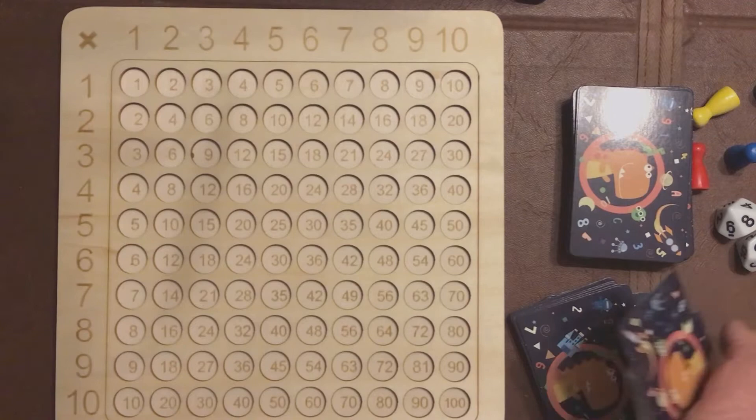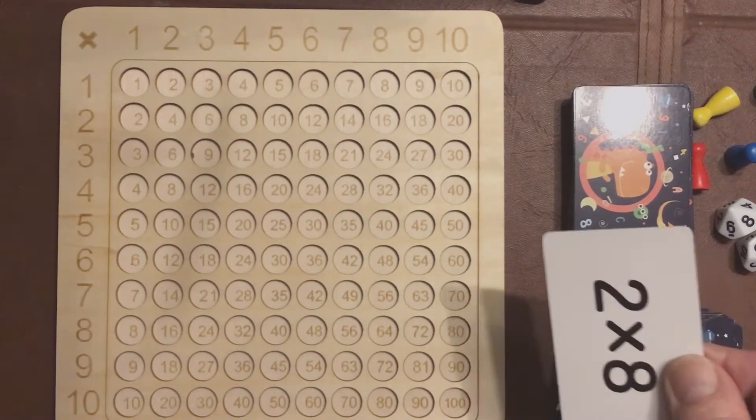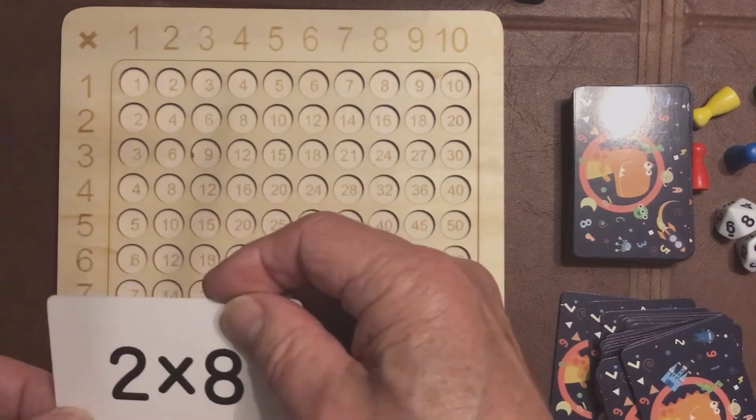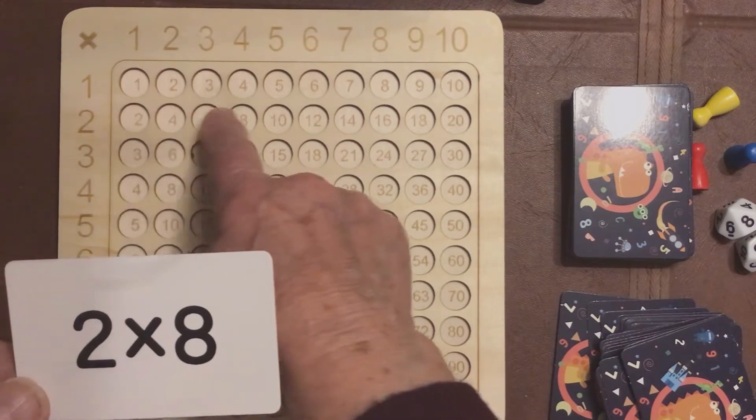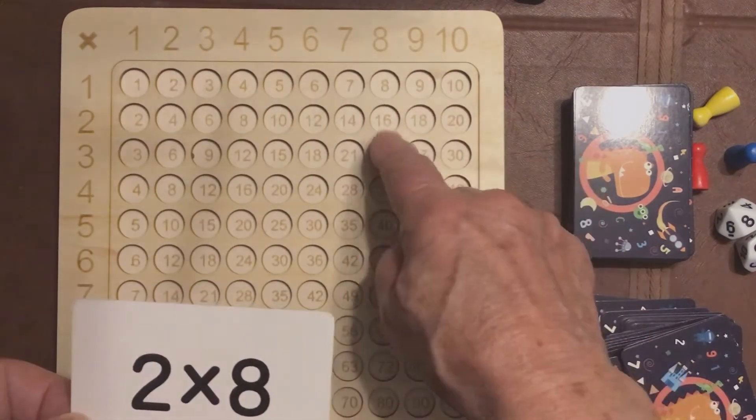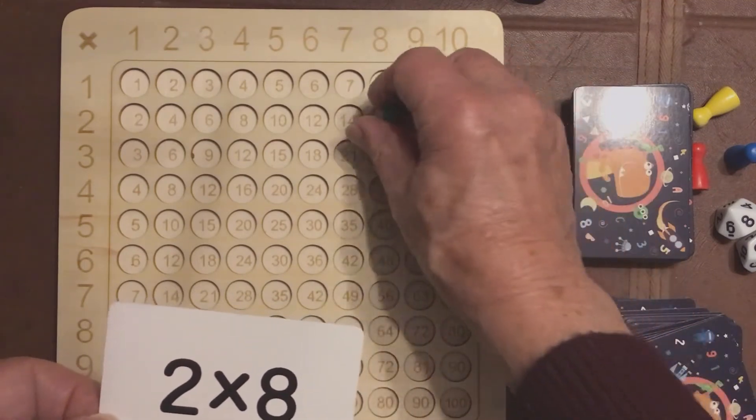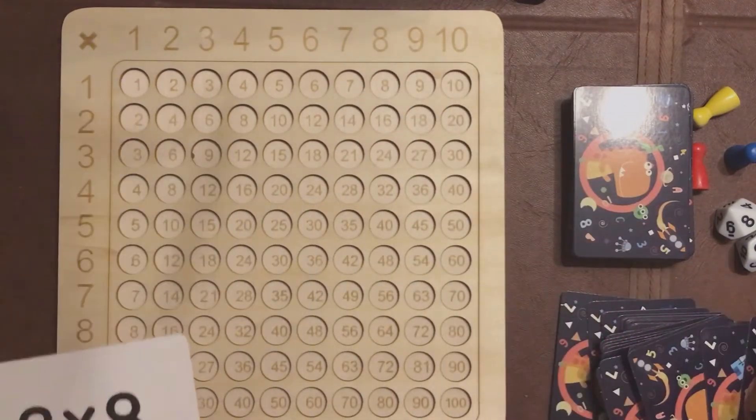First of all, you can pick a card, two by eight, and you say, well, two by eight is two by eight. So, two there, eight there, going down is on there, and the answer is 16. Two by eight is 16.